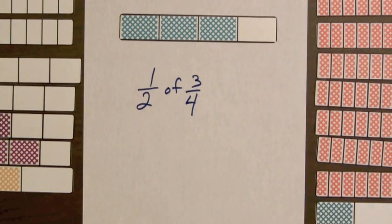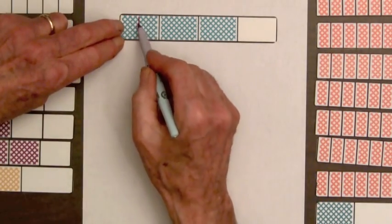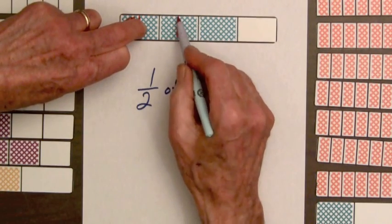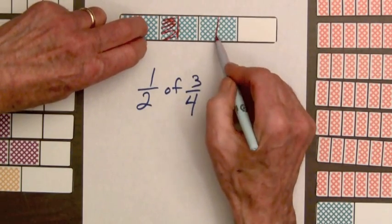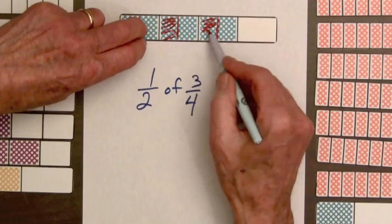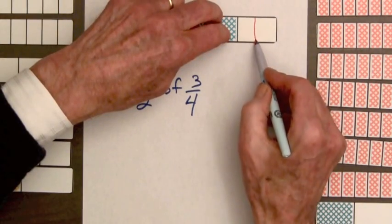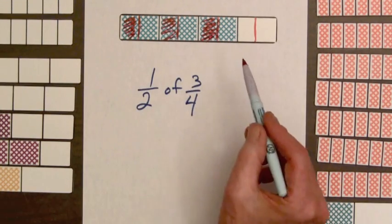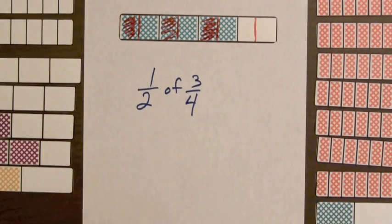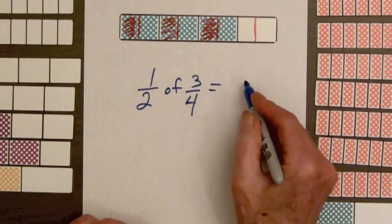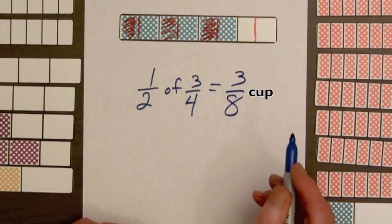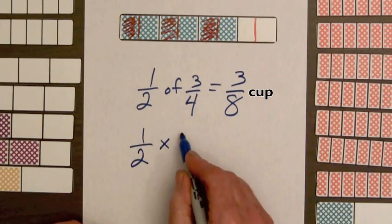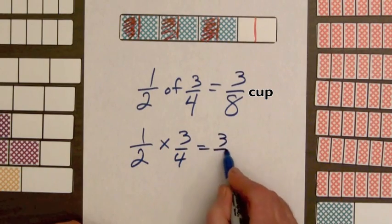Now one way to do this is to take one-half of each fourth. So we could cut this fourth in half. Take half of that. Cut this fourth in half. Take half of that. Cut this fourth in half, and take half of it. Cutting this empty, unshaded part in half. We've now got eight parts. And we're going to be taking three of those parts. So this equation gives us three-eighths. And writing the multiplication using the times sign, one-half times three-fourths equals three-eighths.